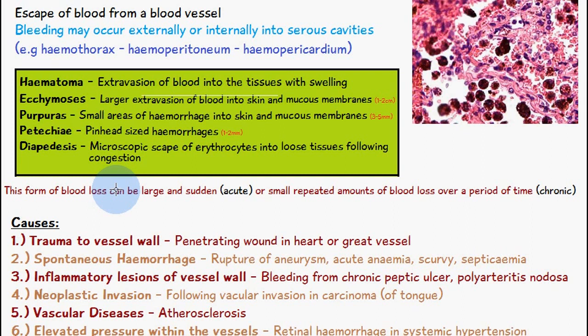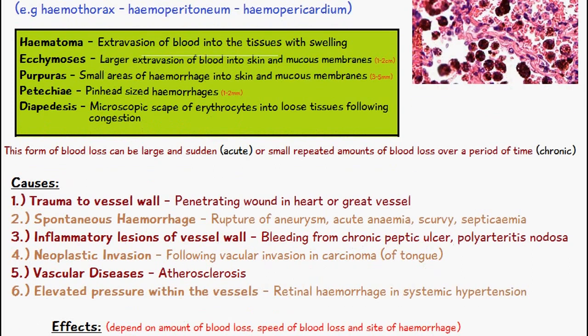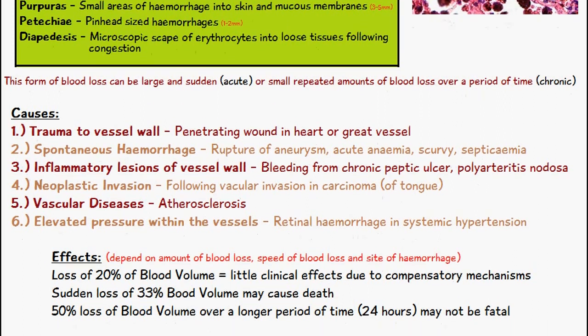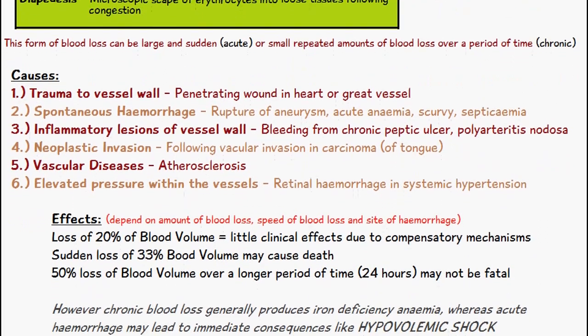This form of blood loss can either be large and sudden, or small repeated amounts over a longer period of time. If it's large and sudden, it would be an acute hemorrhage. If it's small amounts over a period of time, then it's known as chronic.